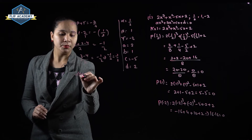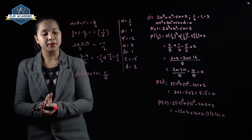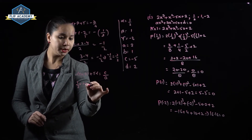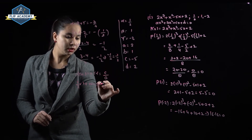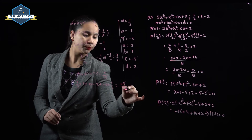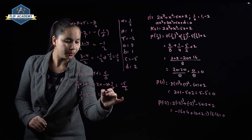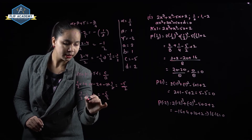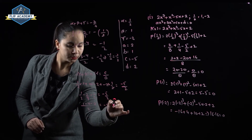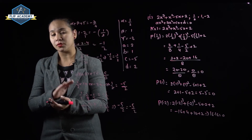Now αβ + βγ + γα = c/a. Substituting α = 1/2, β = 1, γ = -2: (1/2)(1) + (1)(-2) + (-2)(1/2) = c/a = -5/2. Taking LCM: (1 - 4 - 2)/2 = -5/2. So -5/2 = -5/2. The relationship between zeros and coefficients is verified here.